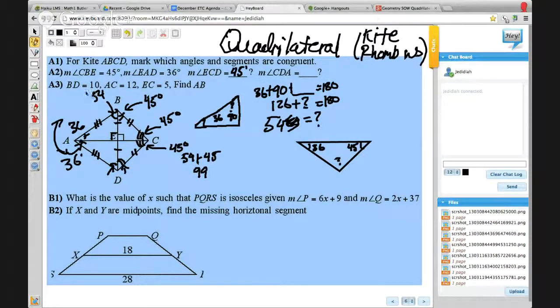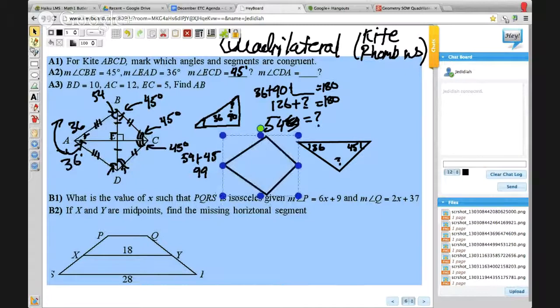All right. Then it says BD equals 10. I should probably redraw this shape. Let's do another redrawing of it so we can see all the pieces. Awesome.